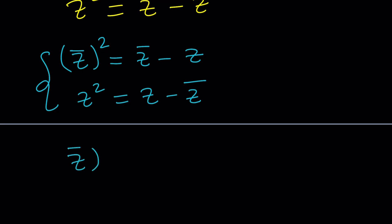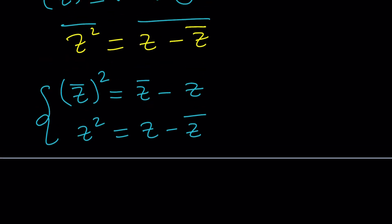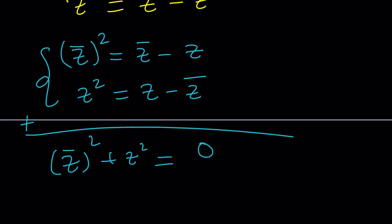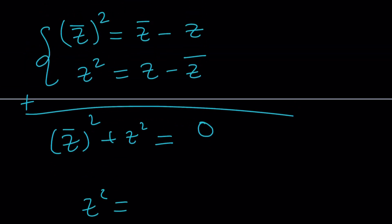That means z bar squared is, which is z squared. I think I kind of messed up here. Let me go ahead and fix it real quick. Here's what we're going to do. We're going to go ahead and add these equations to get zero. Make sense? Cool. So if we add these equations, I'm going to get z bar squared plus z squared equals zero. What does that mean, though? I don't think this is going to give me something helpful.